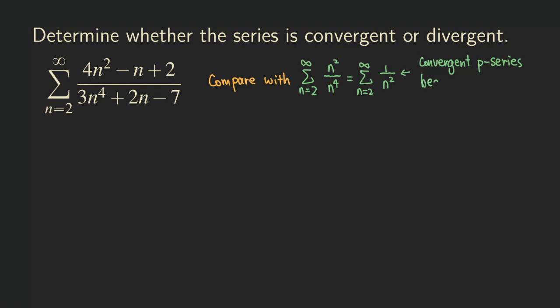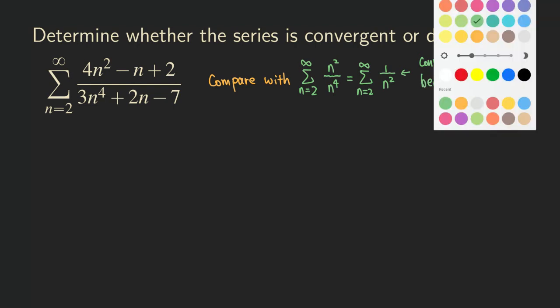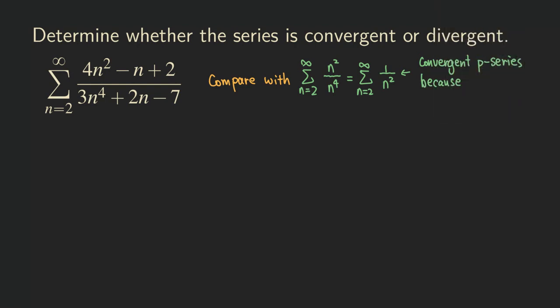Why is it convergent? It's because p is equal to two, which is greater than one.